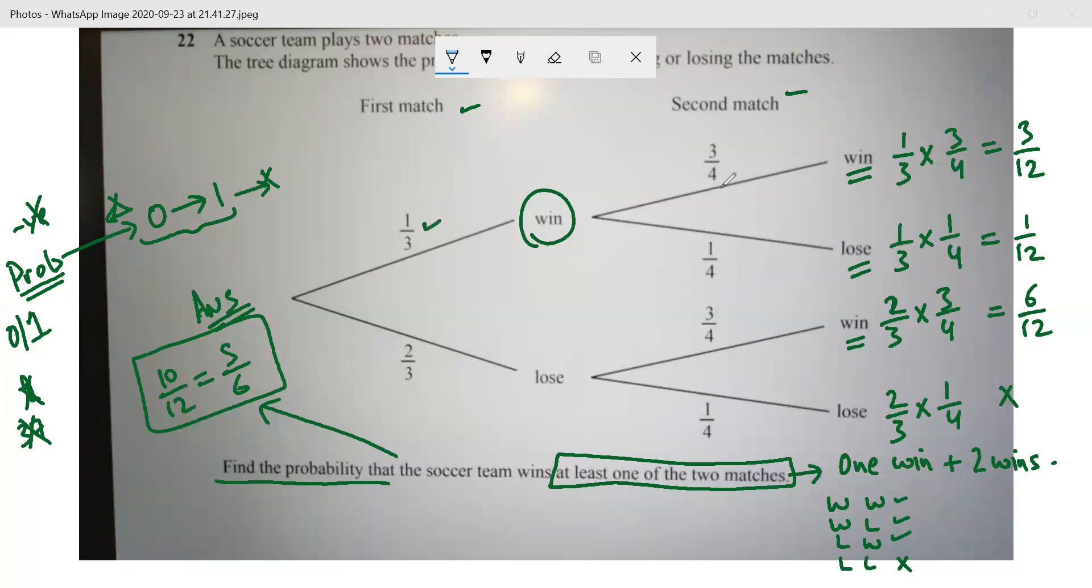So if the first is win and the second is a win, then the probability is 1/3 × 3/4 = 3/12. The first is a win and the second is a lose, then the probability is 1/12. First is a loss but the second is a win, then the probability is 6/12. And this is what I don't want. Loss, loss.